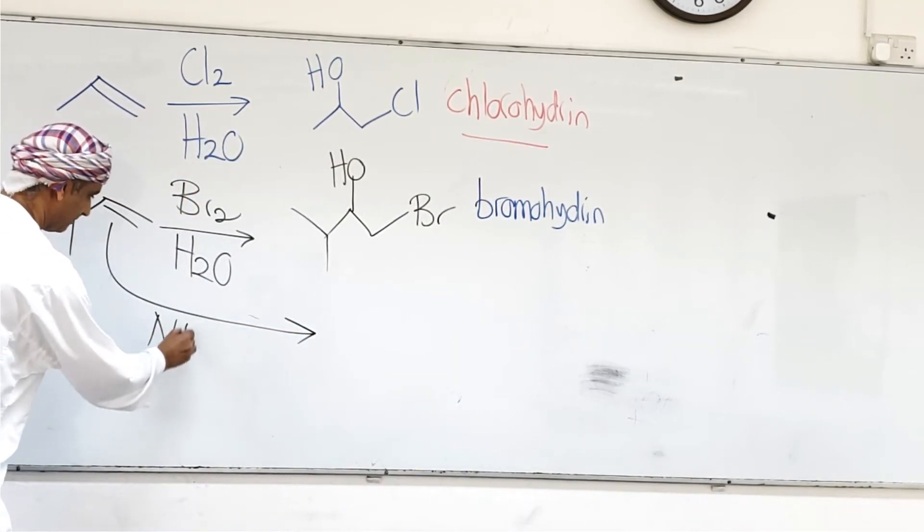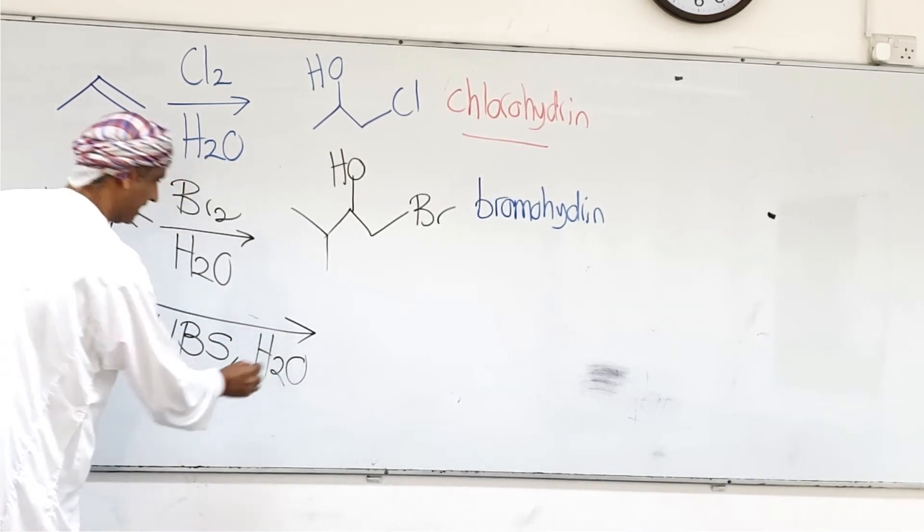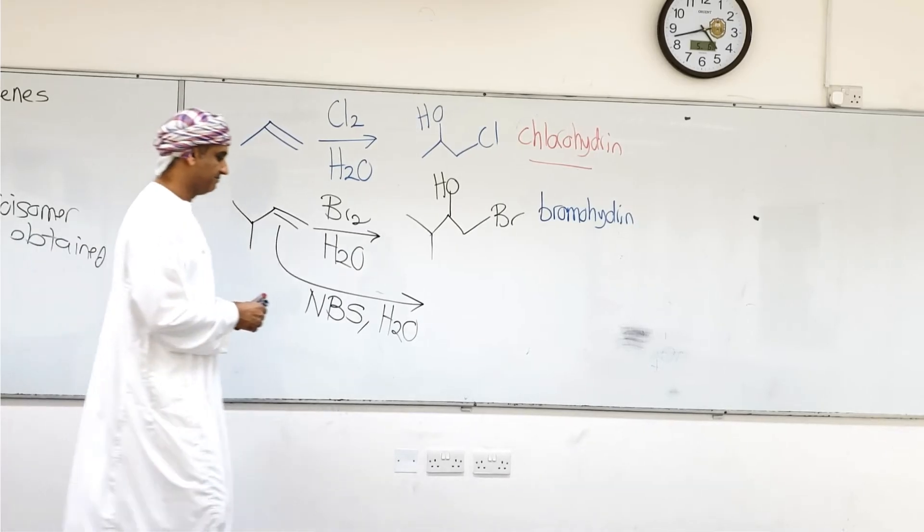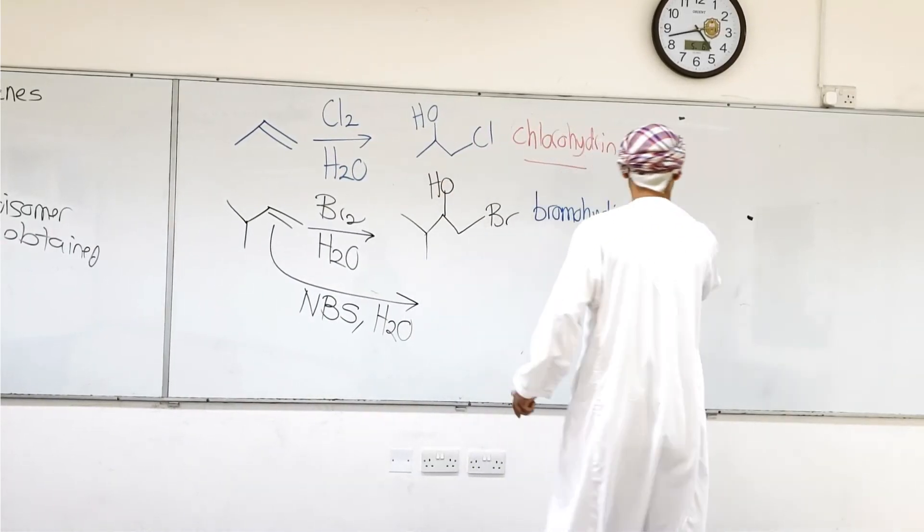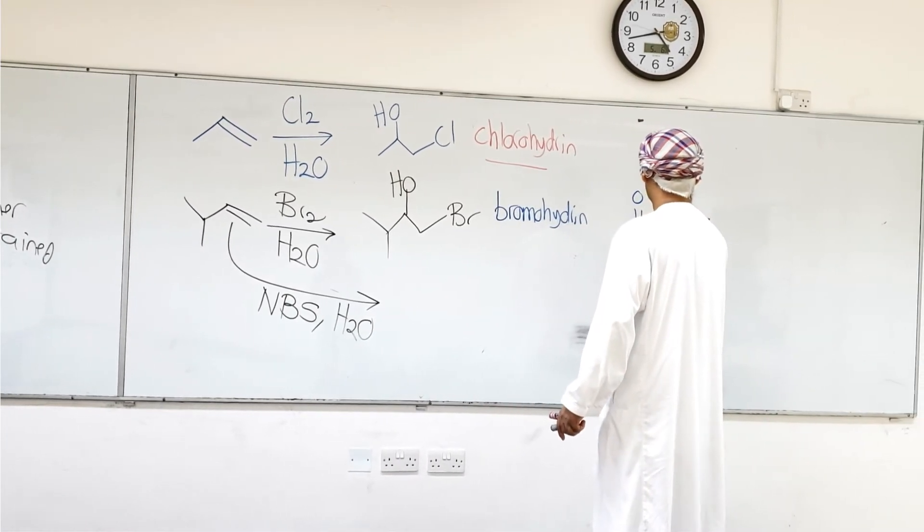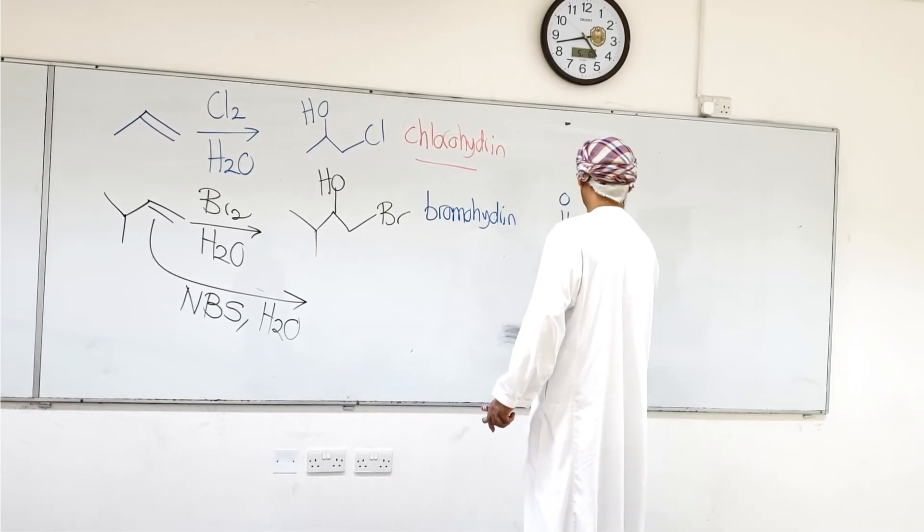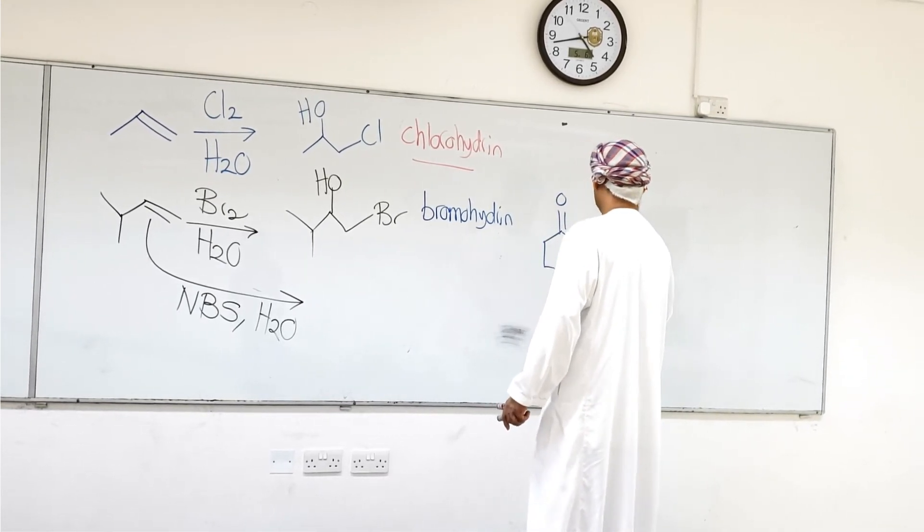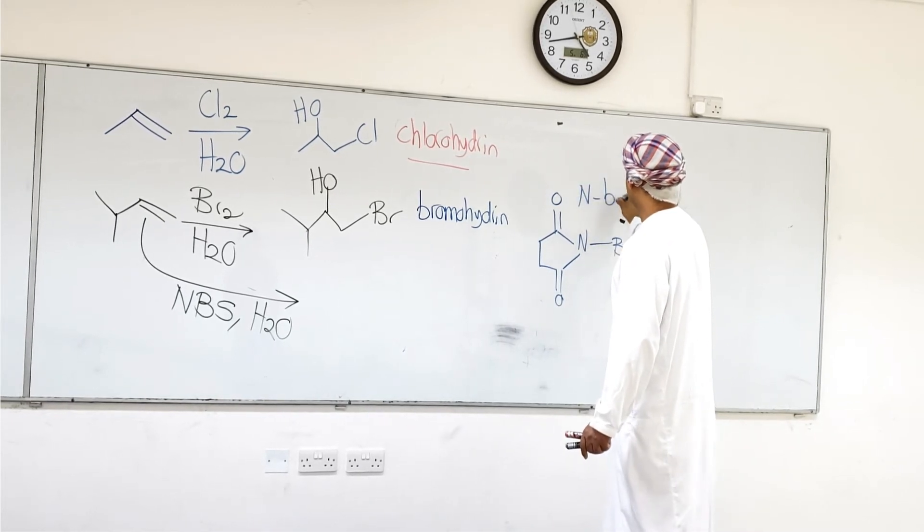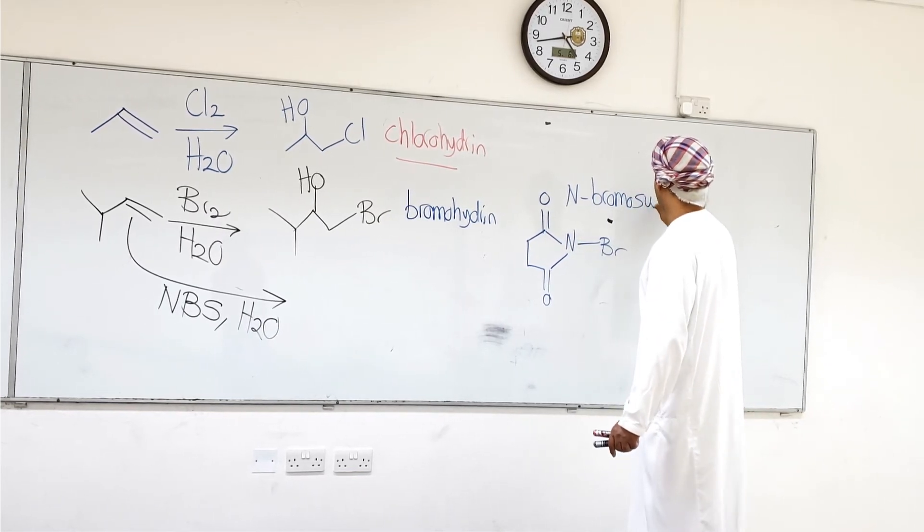Instead of bromine, with NBS, water, NBS. NBS is N-bromosuccinimide, okay? This is NBS. We're going to draw the structure here of NBS. This is NBS. N-bromosuccinimide, to indicate that the bromine is on nitrogen succinimide.